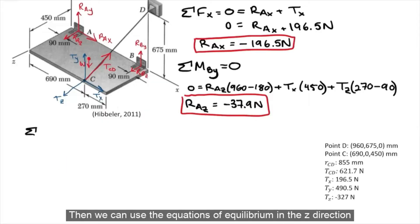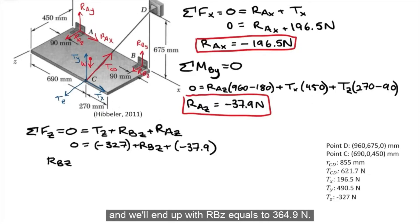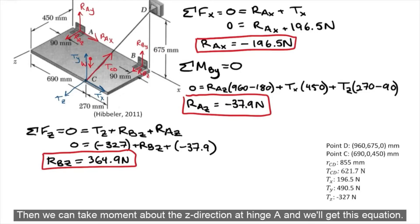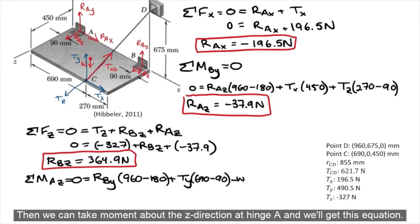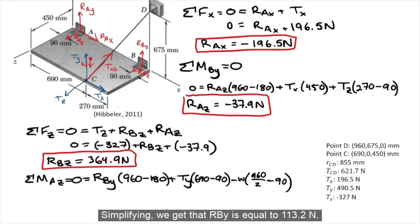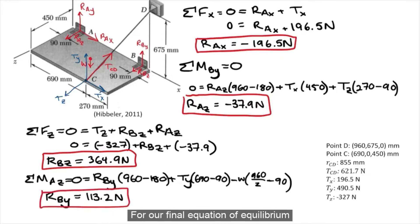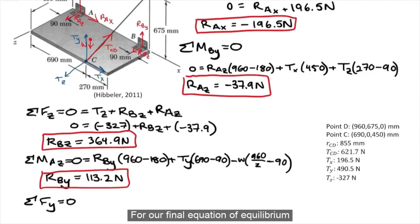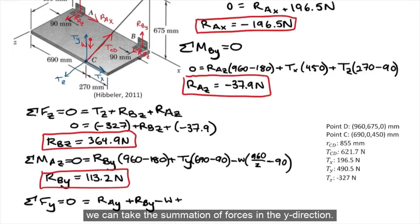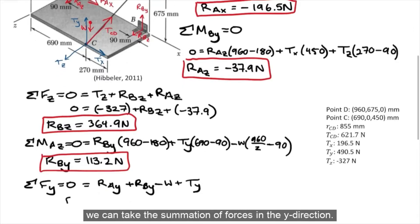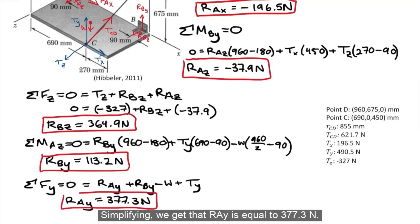Using the equations of equilibrium in the z direction, we get RBz equals 364.9 newtons. Then taking the moment about the z direction at hinge A gives us an equation that simplifies to RBy equals 113.2 newtons. For our final equation of equilibrium, taking the summation of forces in the y direction, we get RAy equals 377.3 newtons.